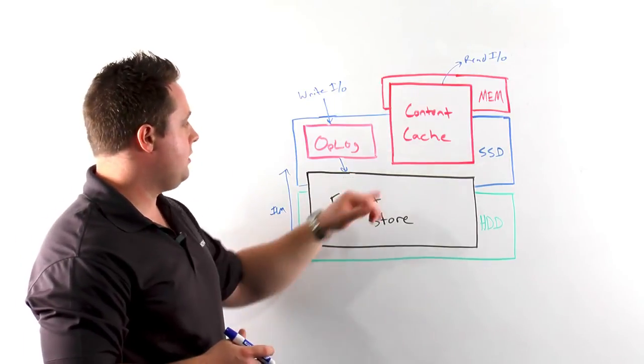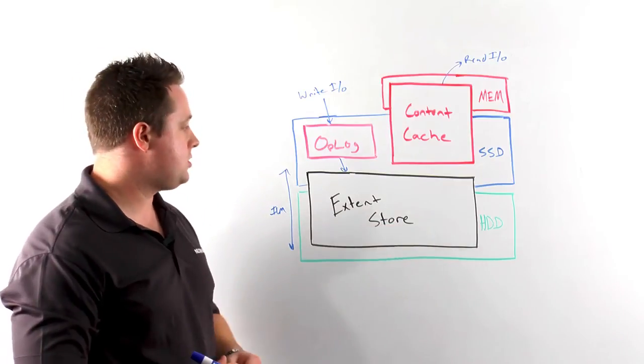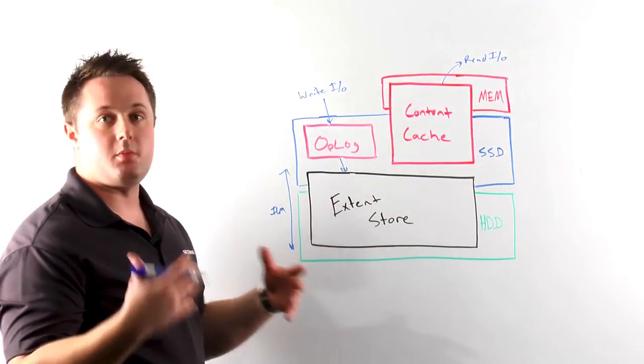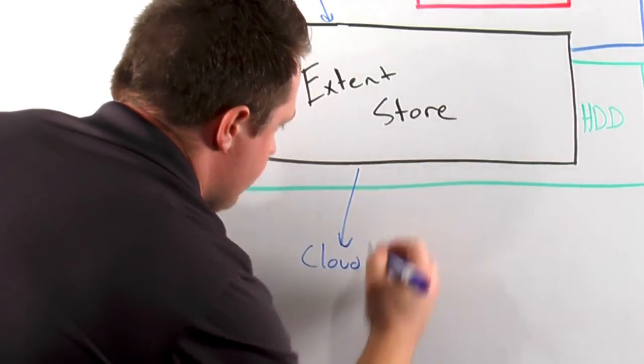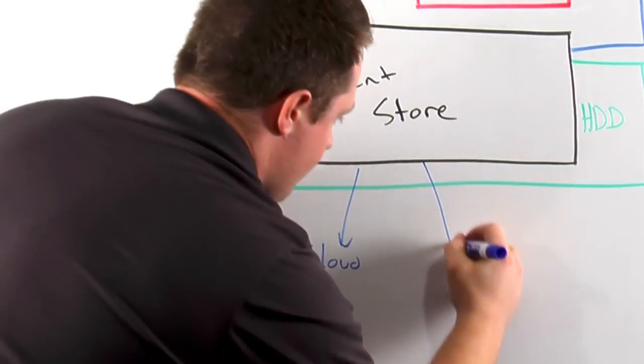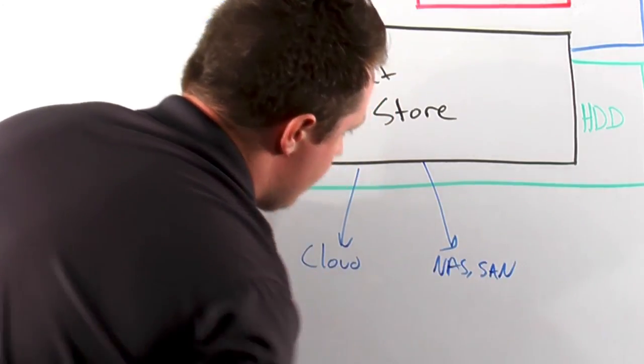Today, from a tiering standpoint, Nutanix provides both SSD and HDD tiers as well as the cache. However, it is an extensible platform which allows us to interface into the cloud for archival, as well as the future possibility to integrate into any existing storage NAS or SAN array.